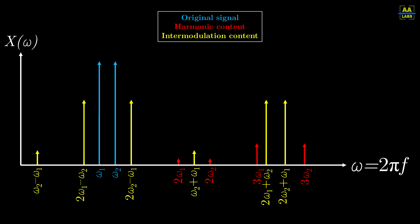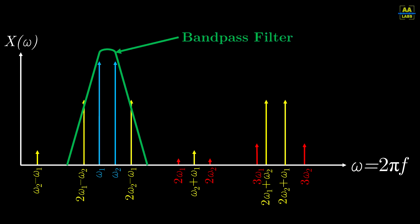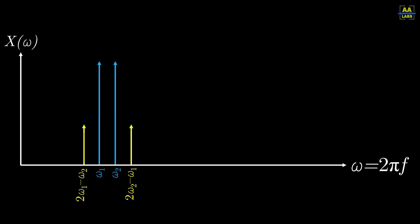In the radio frequency world, a lot of this distortion can be filtered out with a bandpass filter. However, the intermodulation products nearest to the original frequencies are difficult to completely filter out, and often remain in some capacity.